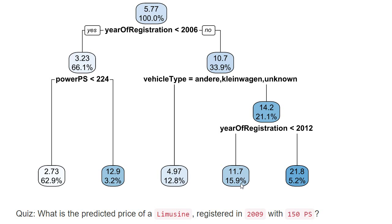This percentage number tells us how many observations from our training data set fall into this leaf. All the observations satisfying those conditions add up in this leaf, and these are 15.9%.